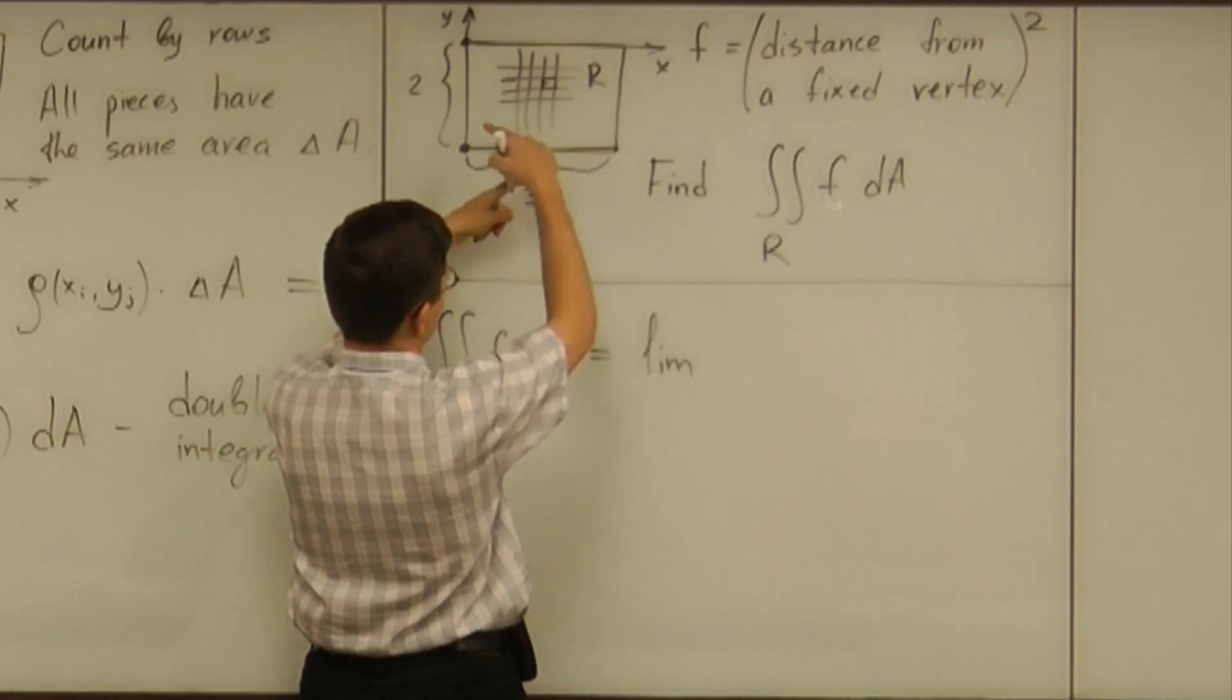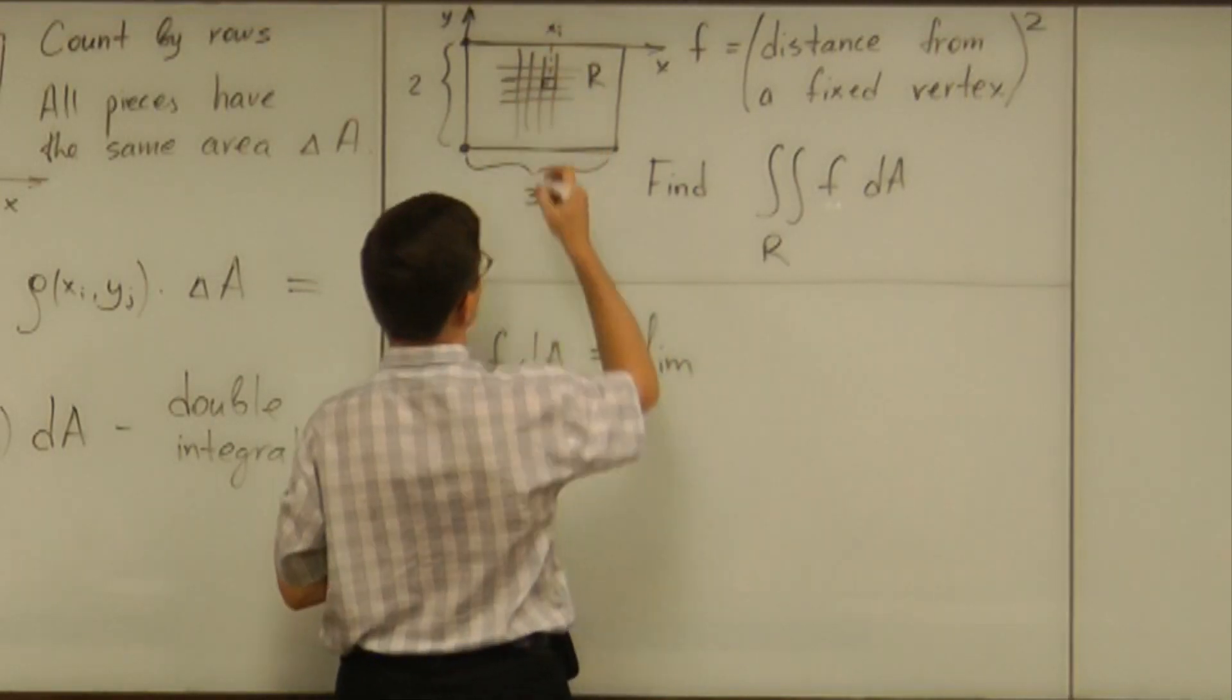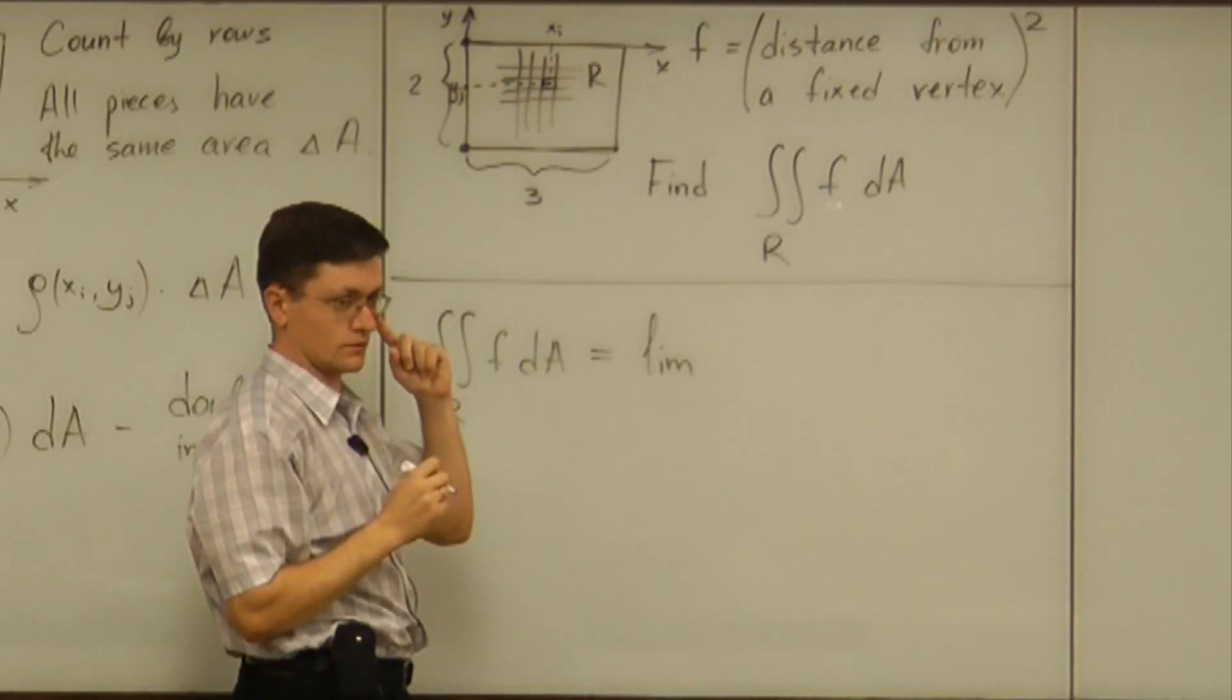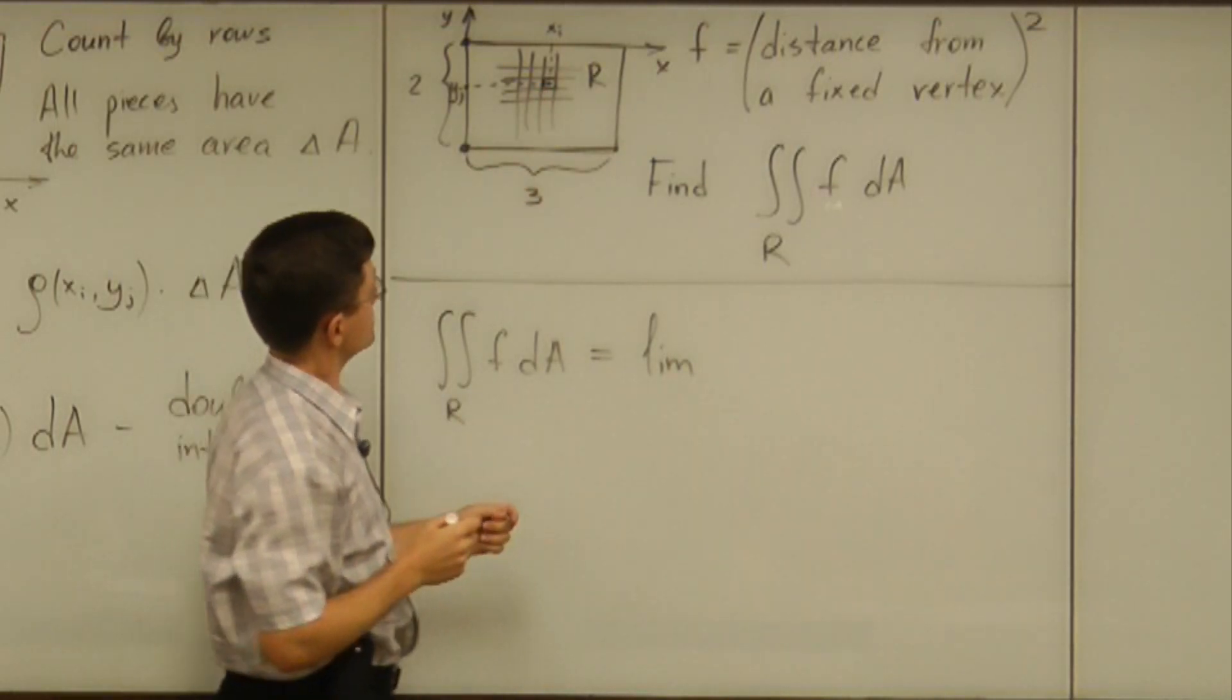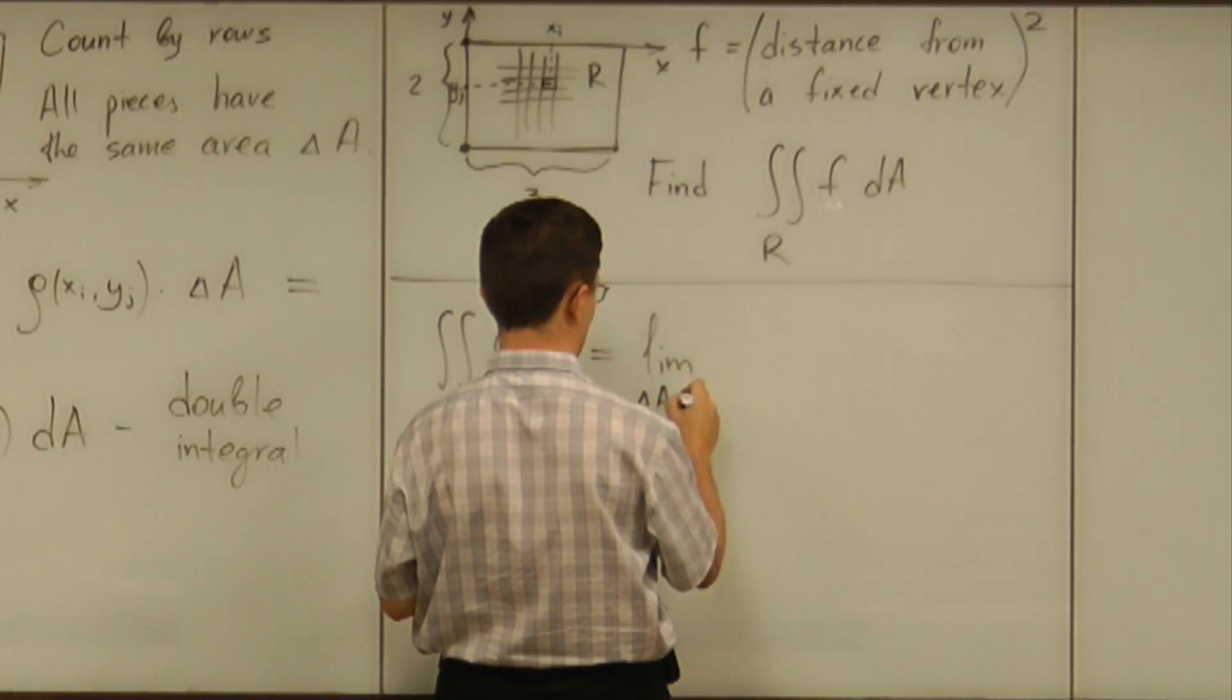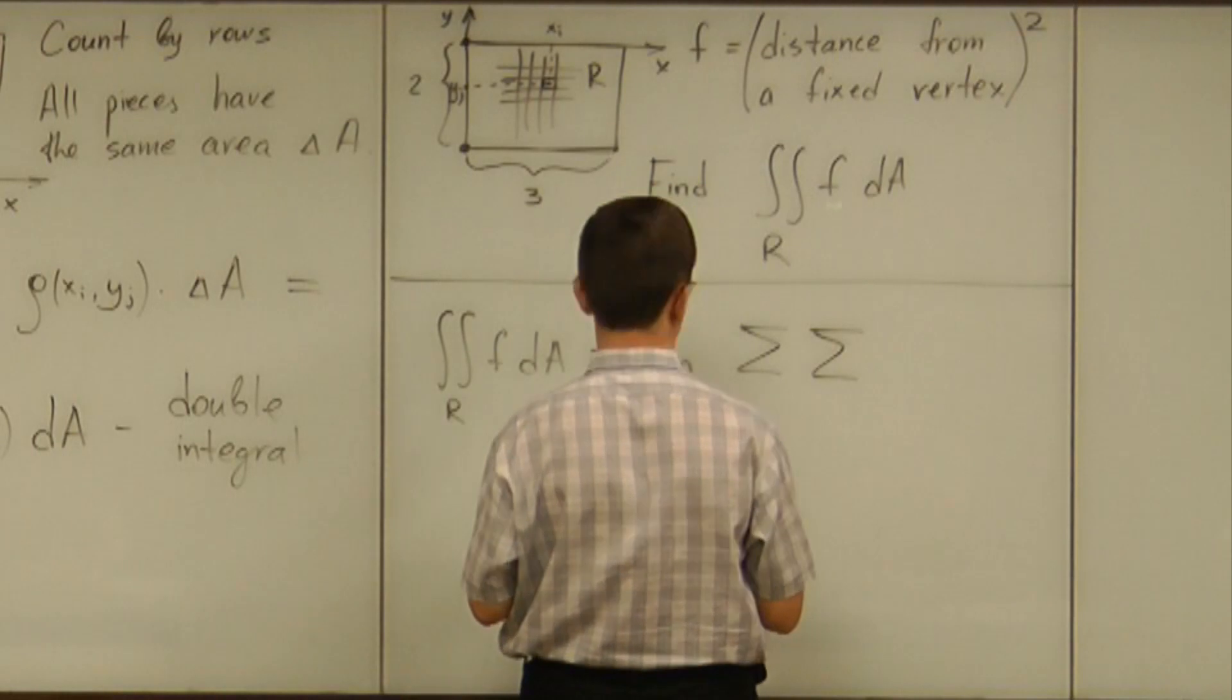We get the arrangement of all those rectangular pieces by indices i and j, according to the coordinate of some point of the center, for example, of these. And then, the double integral becomes limit as delta A entity zero of the sums.